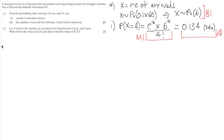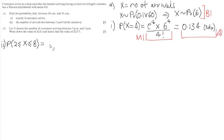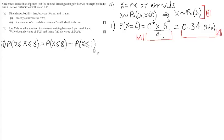Part two says to find the probability that the number of arrivals lies between 2 and 8 inclusive. So this is the probability that X is greater than or equal to 2, but less than or equal to 8. We're going to calculate this by using the tables to take the reading for P(X ≤ 8) and then subtracting P(X ≤ 1).